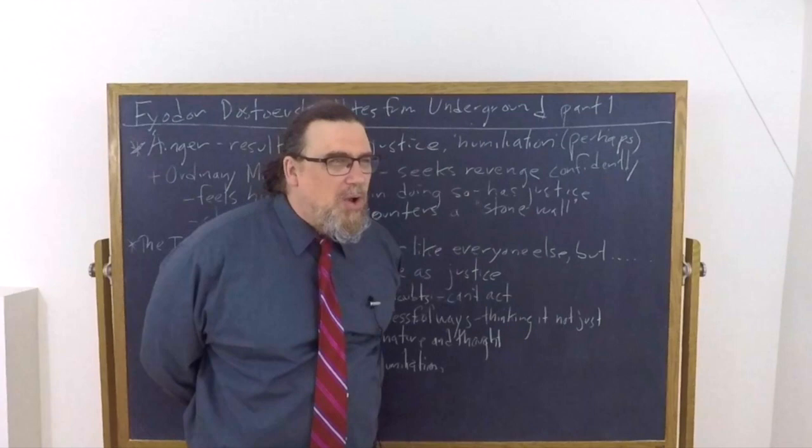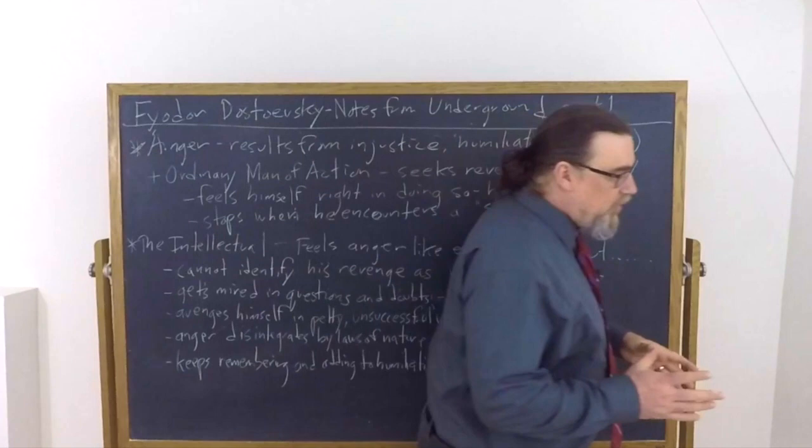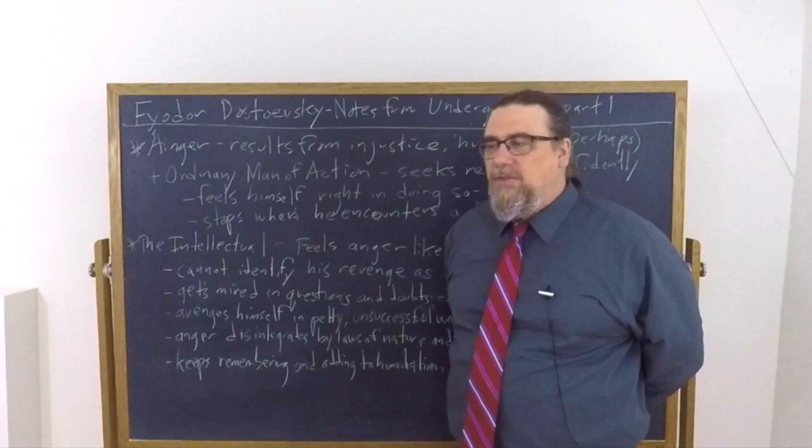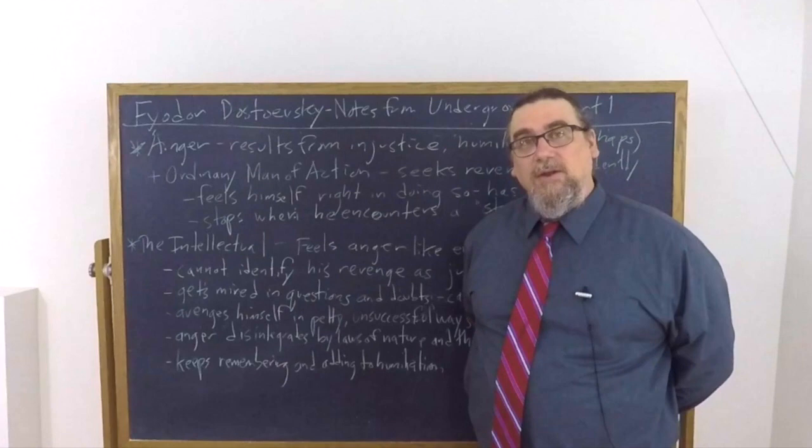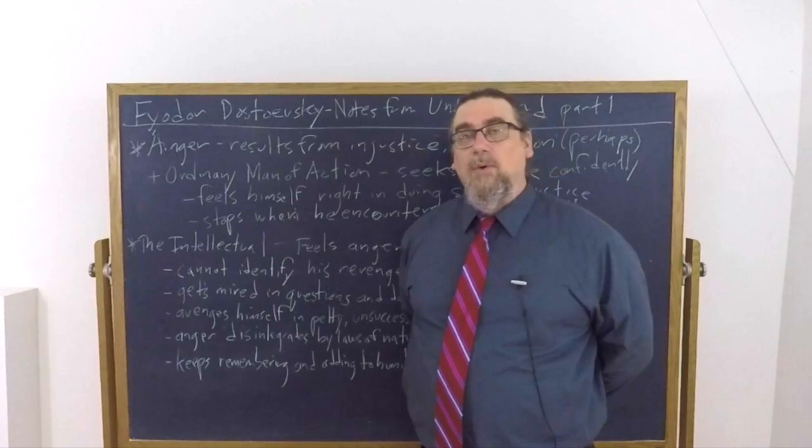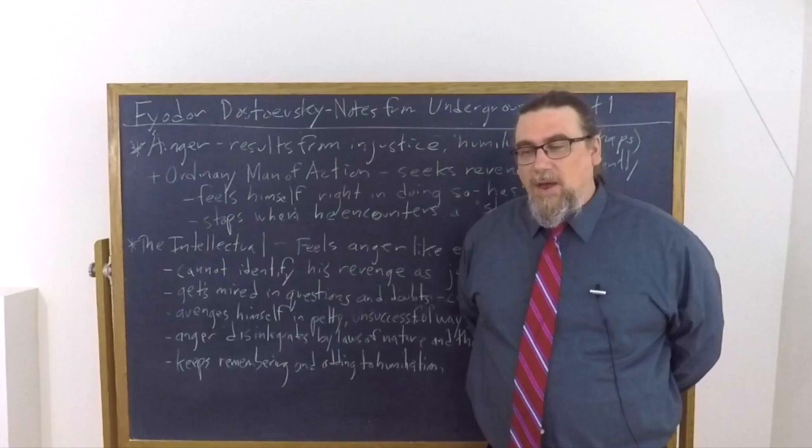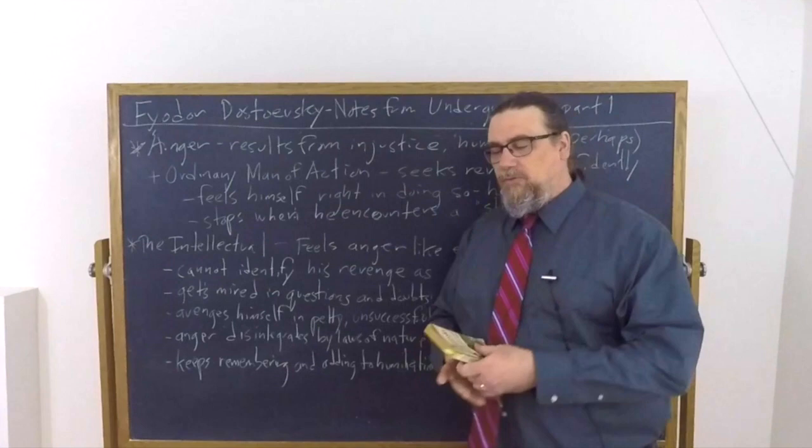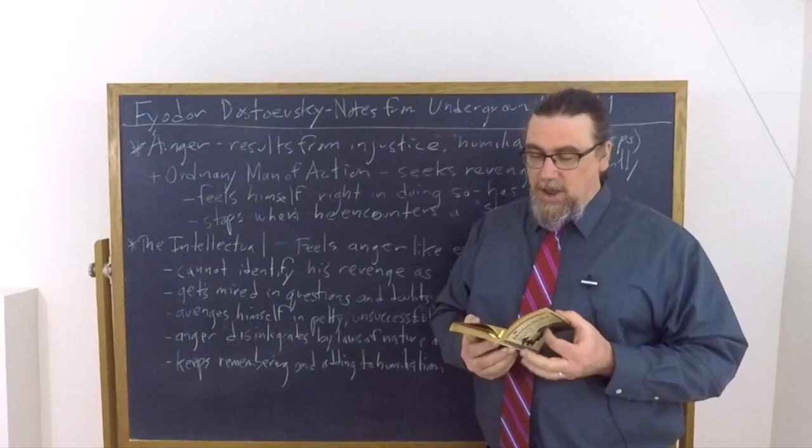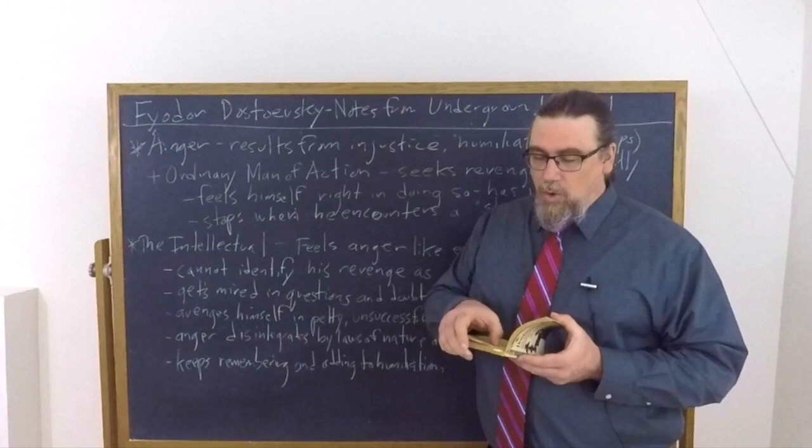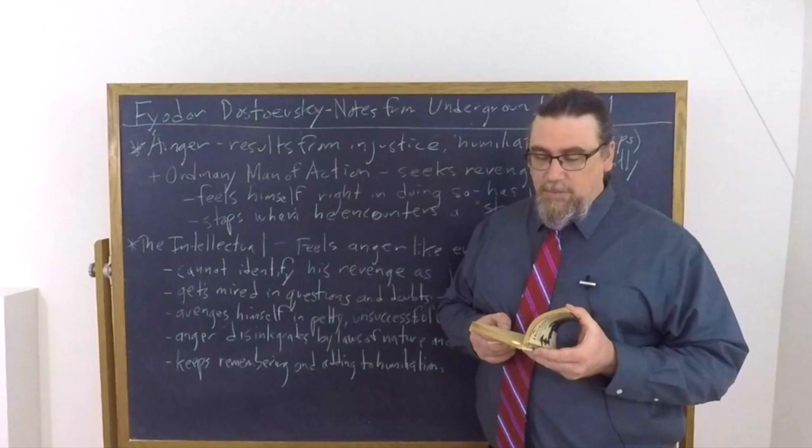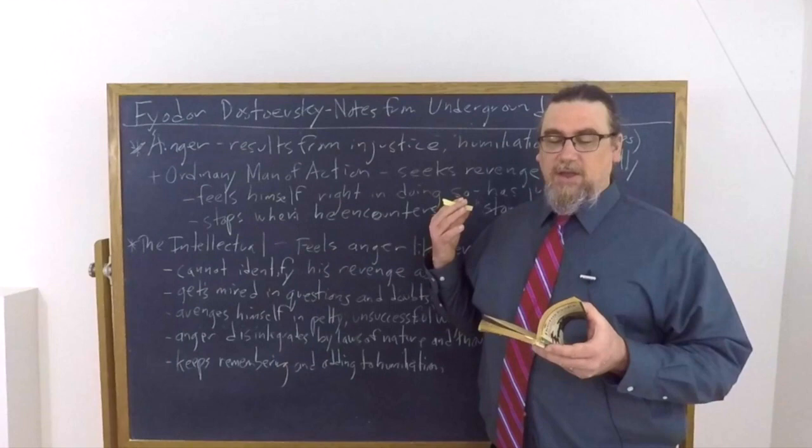It depends on what the offense is and the social rules, but this person will do so confidently. They're not going to say 'I don't know if this is the right thing to do.' If they don't think it's the right thing to do, they won't do it. Dostoevsky talks about this person as feeling themselves in the right. Normal people consider revenge as merely justice.